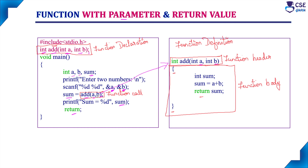The formal parameters copy the values from the actual parameters. Sum is declared as a local integer variable in the user-defined function. The value of a plus b is added and stored in sum, then the sum value is returned. Once the return statement is executed, the user-defined function has completed its execution, and control is transferred back to the calling function with the result. The result of sum is transferred and copied to the left-hand side variable in the main function. The main sum is then printed, and after printing, the main function returns control to the operating system, completing the program execution.